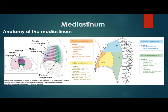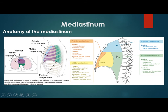A few points about the mediastinum: the anatomy is divided into three compartments — anterior, middle, and posterior — also described as pre-vascular, pericardial space, and posterior compartment. The anterior compartment includes the thymus, thyroid, and lymph nodes. The middle contains the pericardium, large vessels, and trachea. The posterior compartment contains the esophagus, paraspinal structures, and some nerves.